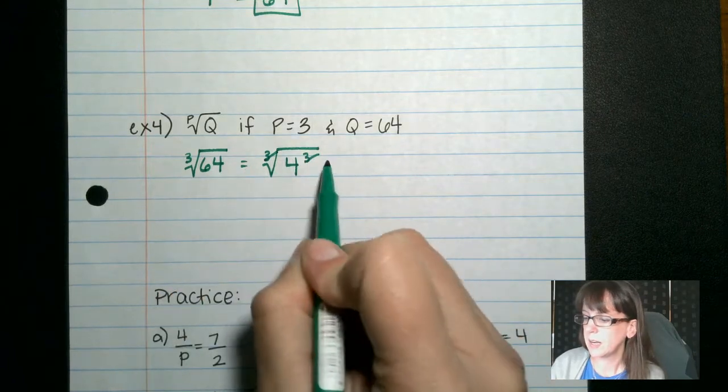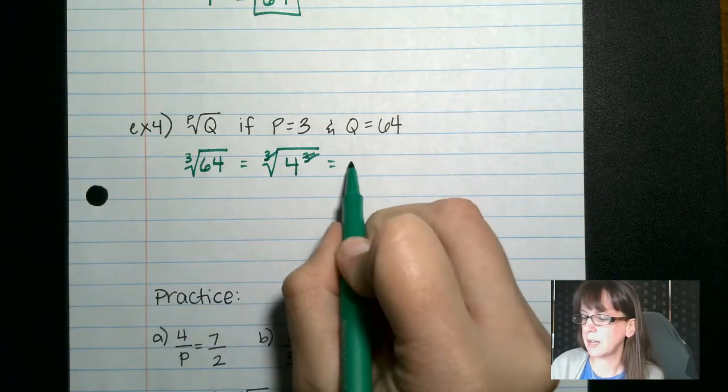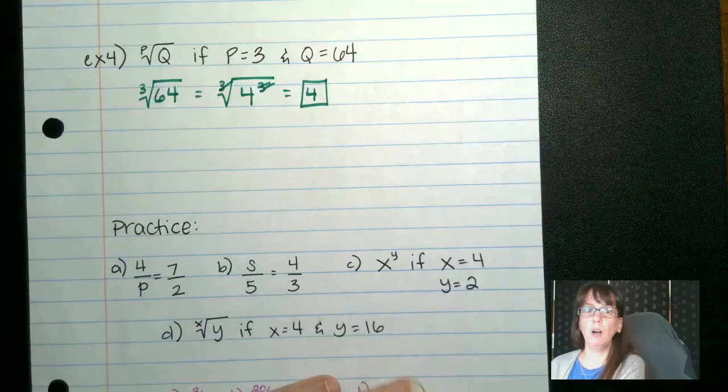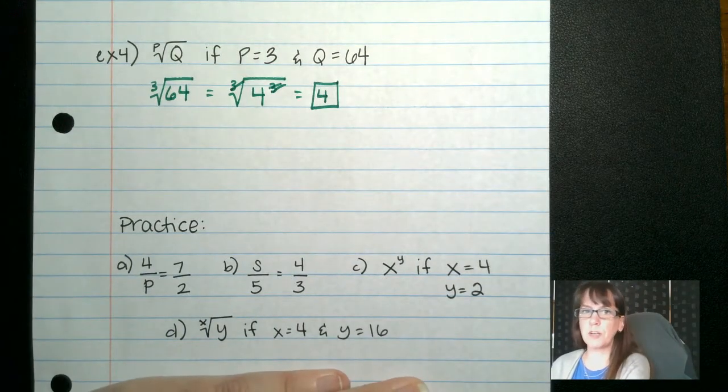These cancel out, and I'm left with, there we go, cancel out, and I'm left with 4. All right. Here are your practice problems. Oh, that was pretty close. There are your practice problems.